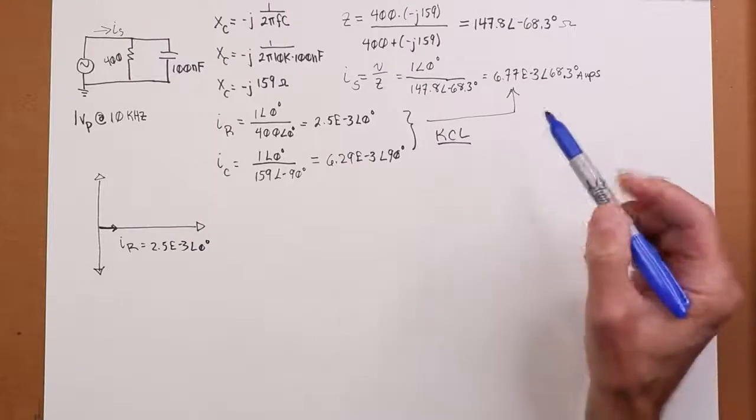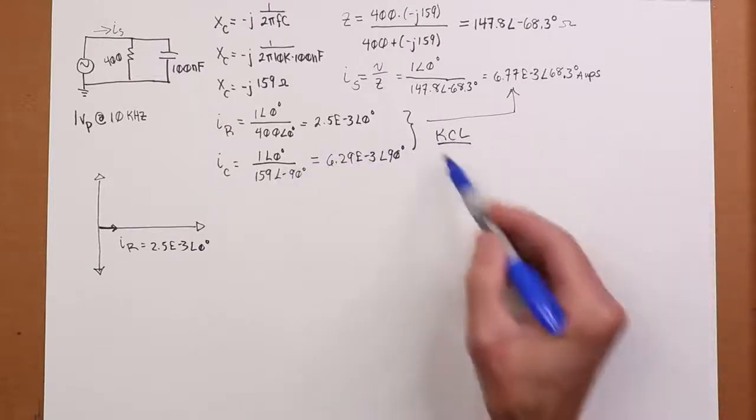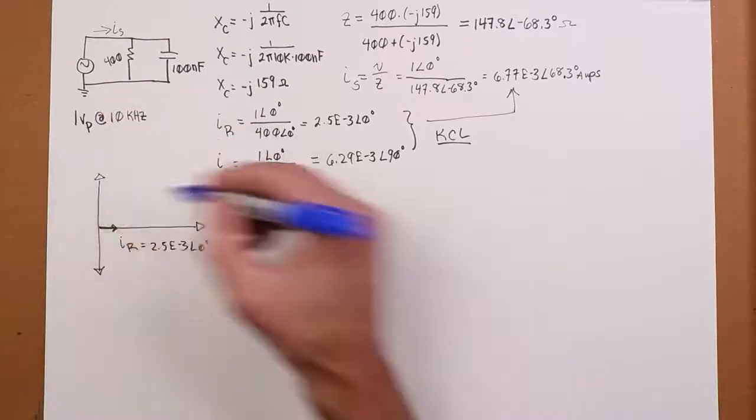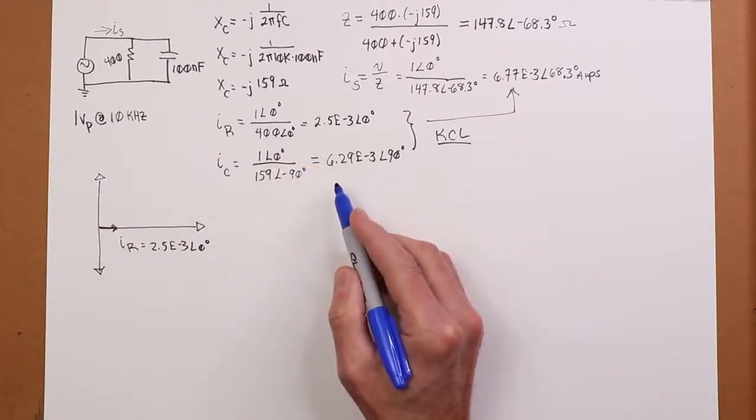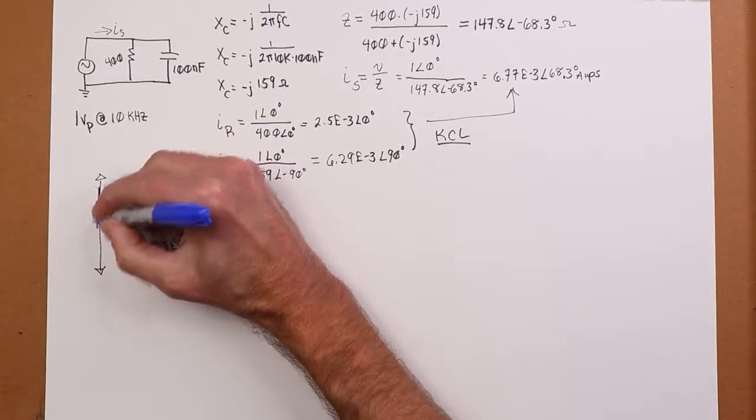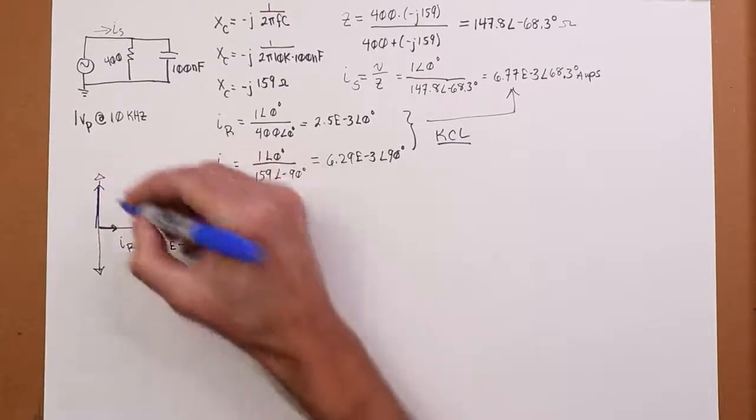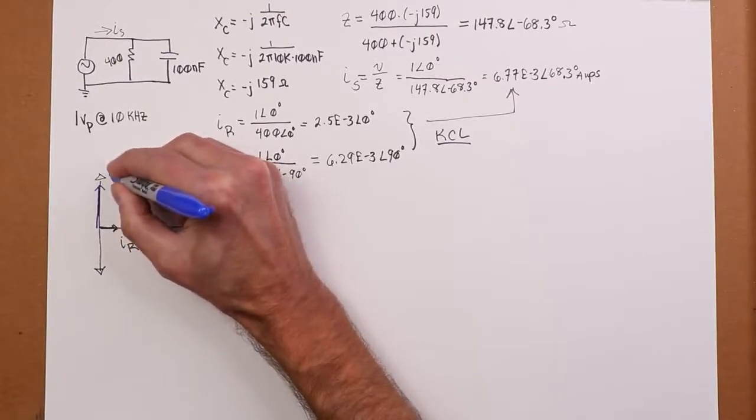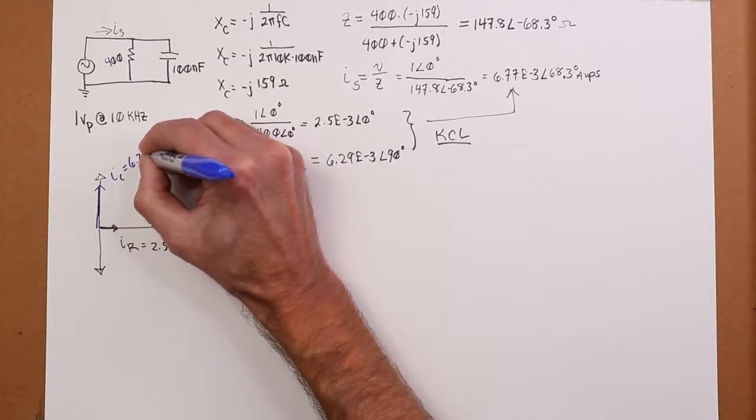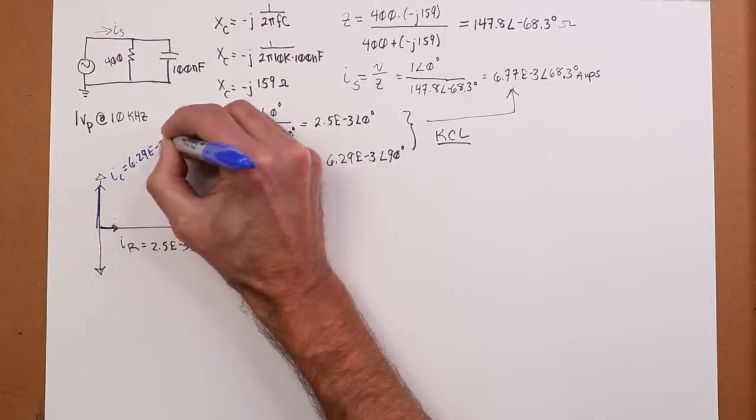Okay, now, the corresponding capacitor current, 6.29 at 90, so that's straight up and down. And it's about 2.5 times the size. So quick sketch here. That's going to look something like this. Alright, 6.29 milliamps at 90 degrees.